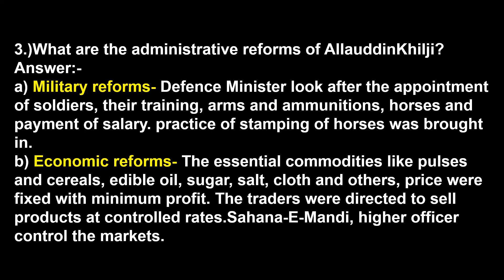Question: What are the administrative reforms of Alauddin Khilji? These are categorized into military reforms and economic reforms. Under military reforms, the defense minister looked after the appointment of soldiers, their training, arms and ammunition, horses, and payment of salary. The practice of stamping of horses was also introduced. Under economic reforms, essential commodities like pulses, cereals, edible oil, sugar, salt, and cloth had prices fixed with minimum profit. Traders were directed to sell at controlled rates, and the Shahna-e-Mandi (a higher officer) controlled the markets.